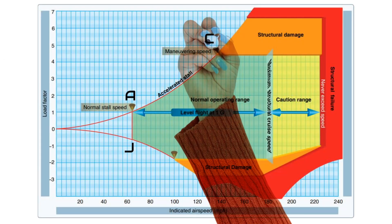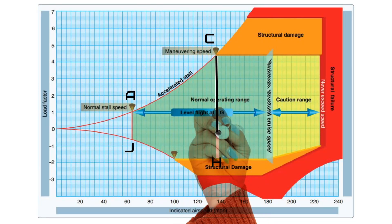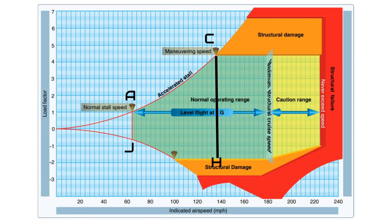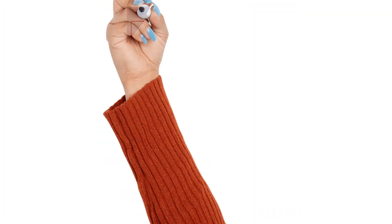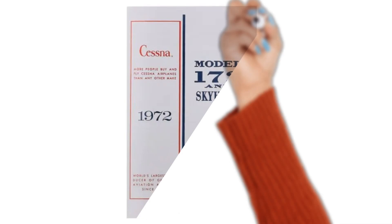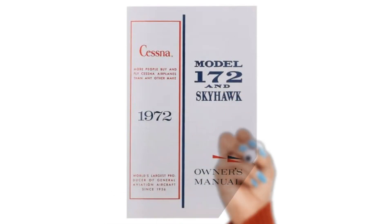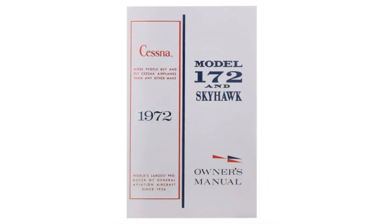From point C to point H is the maneuvering speed, or VA. Up to this speed, if we put too much load on the airplane, it will stall before any structural damage can happen. VA is not color-coded on the airspeed indicator. This maneuvering speed is noted in the POH and is often marked on a placard on the instrument panel.